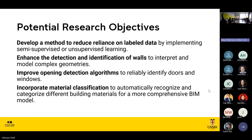Our potential research objectives are: first, to develop a method to reduce reliance on labeled data using semi-supervised or unsupervised learning algorithms. Second, identification of walls, complex geometries, and opening detection algorithms — focusing more on walls, doors, and windows. Third, to incorporate material classification as a potential research objective.